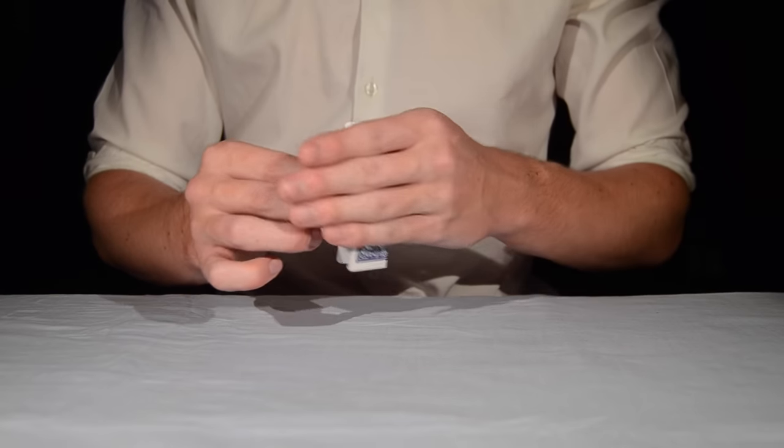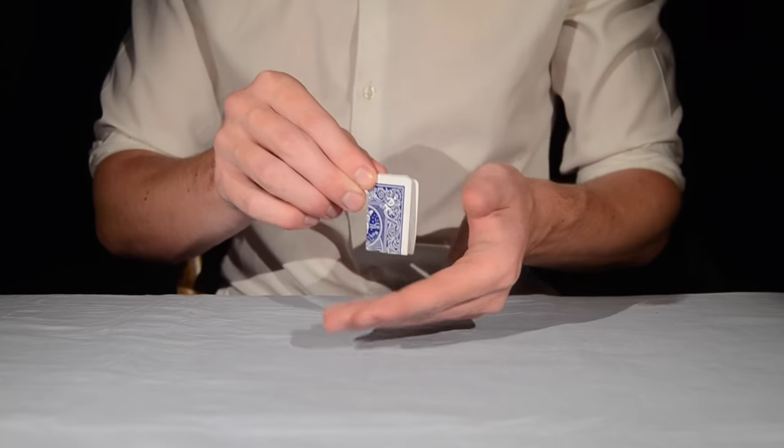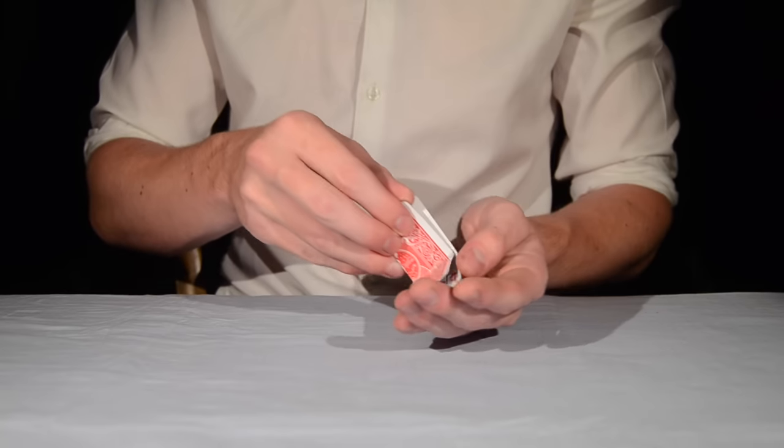The magician folds a card into four. The card is blue and then it changes into a red card. Everything can be inspected.